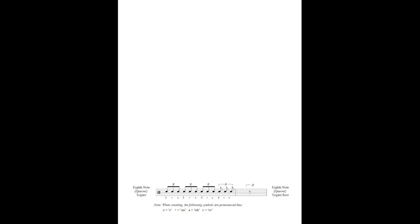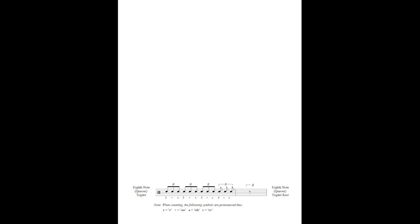Triplets are basically eighth notes crunched into a beat, but because there are three of them with a triplet feel, you count them as 'one and uh.' I use 'uh' rather than 'ah' so as not to confuse them with sixteenth note counting ('one e and ah'). Triplets are counted as 'one and uh, two and uh' — they have that bounce feel: 'one and uh, two and uh, three and uh, four and uh.'